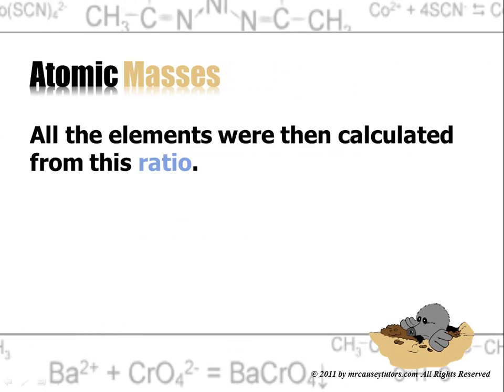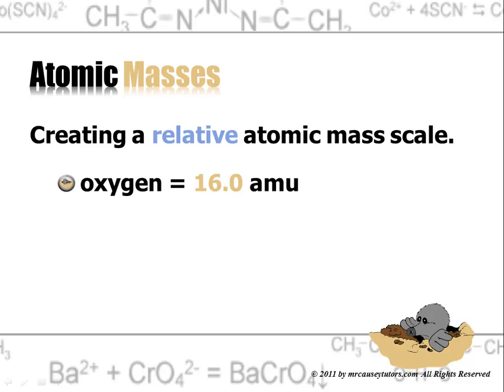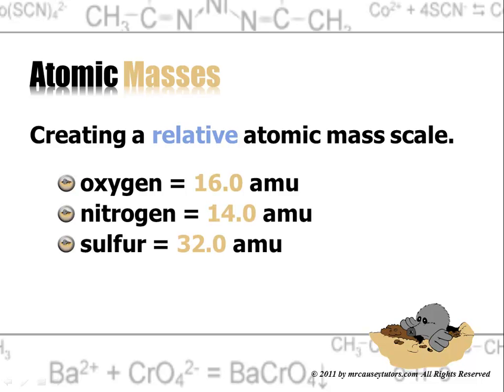All the elements were then calculated from this ratio and creating a relative atomic mass scale which could be applied to the periodic table. Oxygen would be 16 atomic mass units because it was 16 times bigger than hydrogen. Nitrogen was 14 atomic mass units. Sulfur was 32.0 atomic mass units.